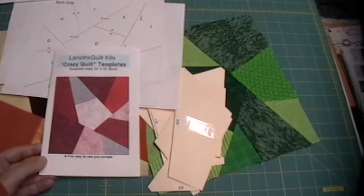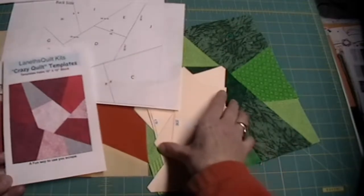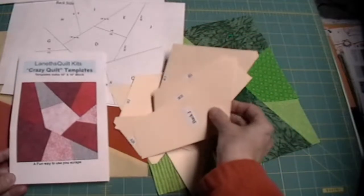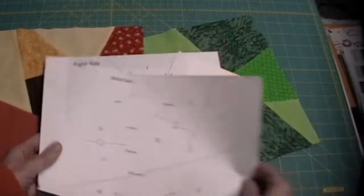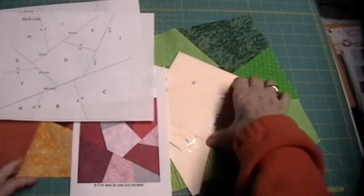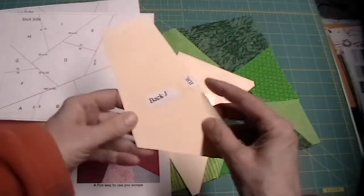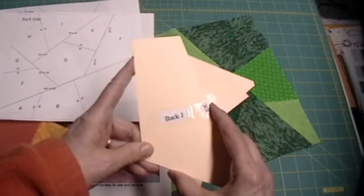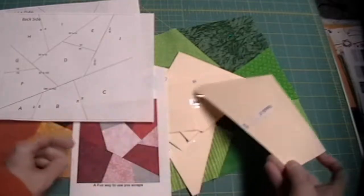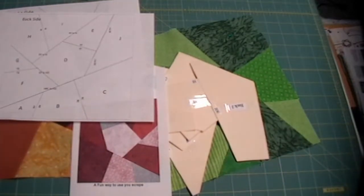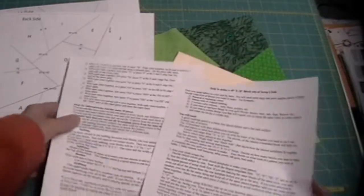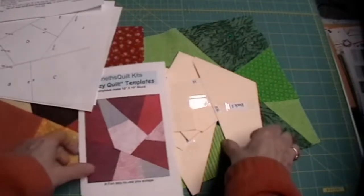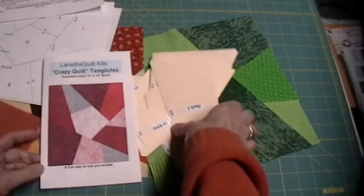The crazy quilt pattern template pattern comes with all ten heavy duty templates that can be reused. The two pictures that help you to place the templates. The templates are clearly marked if you want to do a mirror. There is a back and a front side. And the edges are marked so you don't get confused on which edge goes to which edge to create the design. Also there's two pages of instructions, step by step, on how to cut and how to sew the block together. All you need are your scraps to come up with some adorable crazy quilt ideas.